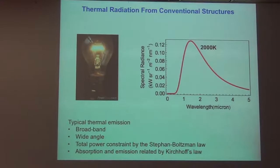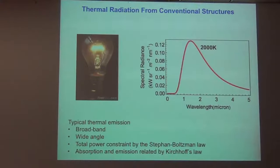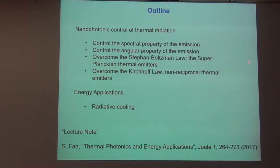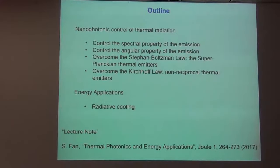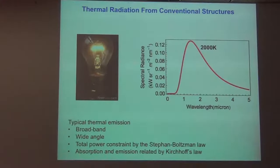One interesting point in thinking about nanophotonic structures is that when at least one of the features is comparable to thermal wavelengths, the thermal radiative properties are drastically different from textbook examples. In fact, one can argue that every single aspect of this can be changed. That forms the outline of the first part of my talk — going through the most prominent properties of blackbody thermal radiation and arguing that nanophotonic engineering can change them. In the second part, I'll give one application in energy technology: radiative cooling. Let me start with controlling the spectral property.